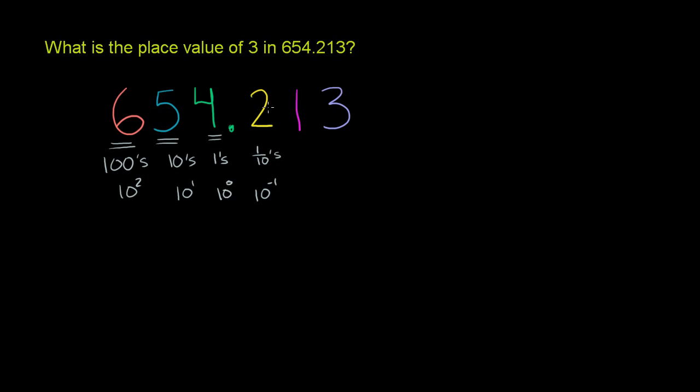Then if we go to this magenta, if we go two places to the right, this represents hundredths. This represents hundredths, or 10 to the negative 2. And then finally this 3, this represents thousandths. This represents thousandths, or 10 to the negative 3.